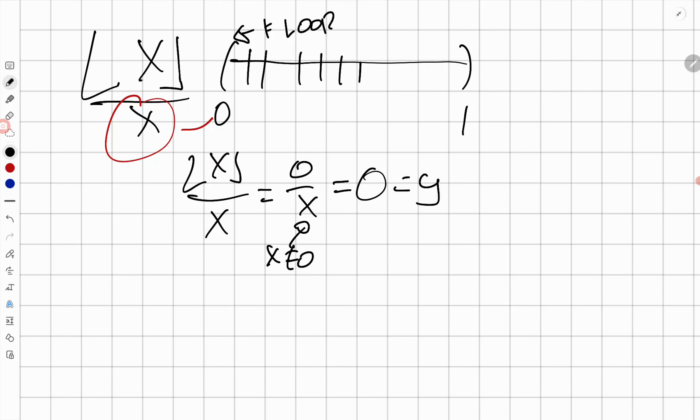Okay, so if we were to graph this function over the interval from zero to one, it would look like this. This is zero, this is one. Excluded, excluded, and then this is zero equals y. So that's the graph of that.